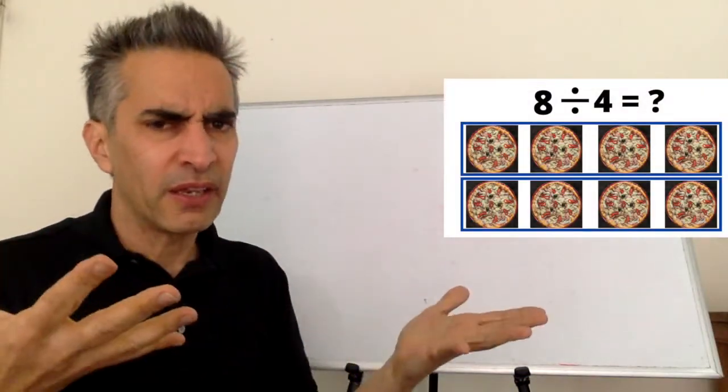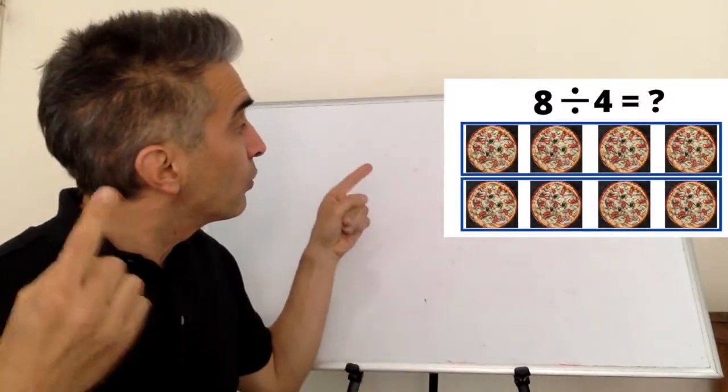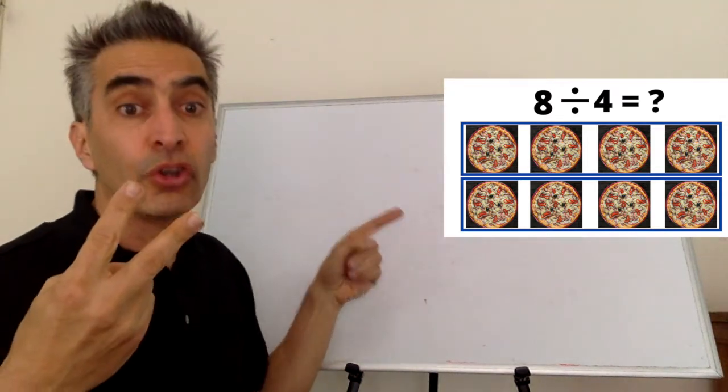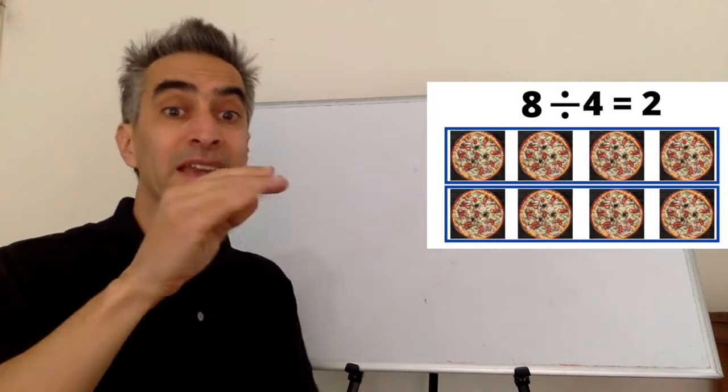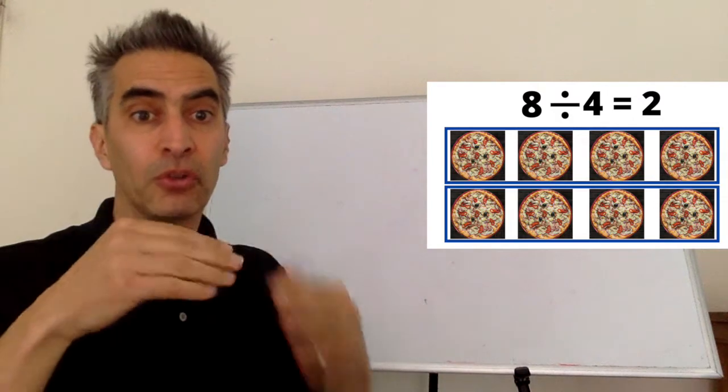The answer is one, two, two. Eight divided by four equals two.